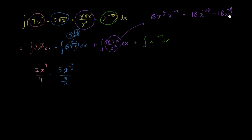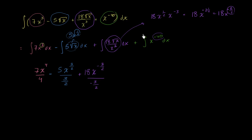We increment the exponent −5/2 by 1 to get −3/2. So the antiderivative gives us x to the −3/2, divided by −3/2, with 18 out front. For the final term, the exponent is −40; incrementing gives x to the −39, all over −39. Now we can add our constant C.